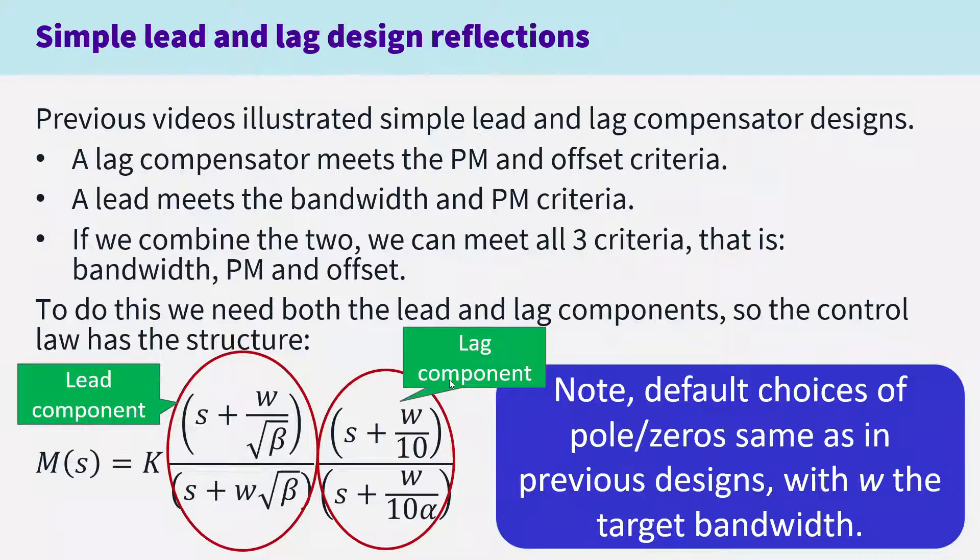Once you've set omega, your target bandwidth, you can see the poles and zeros are defined solely by these parameters, beta and alpha, which we have to choose.